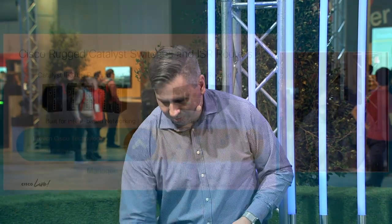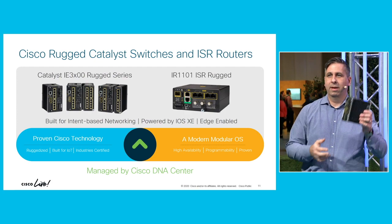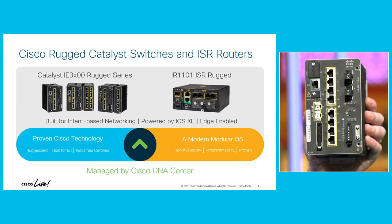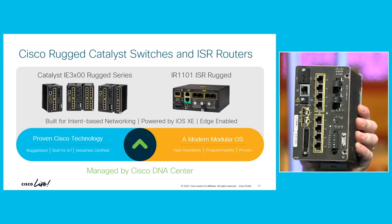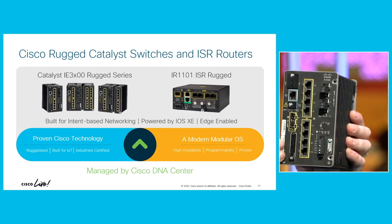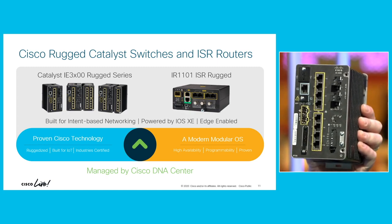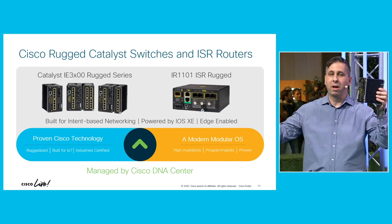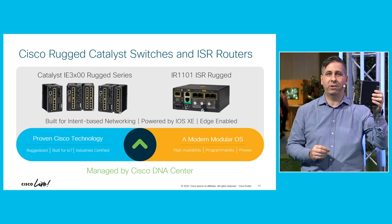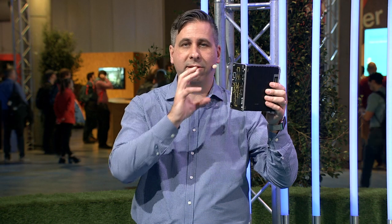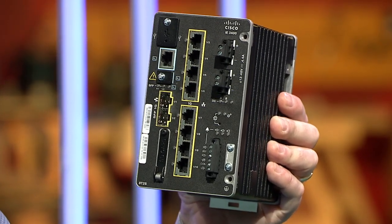So how is Cisco meeting these challenges? Let's start with the networking platforms themselves. This Catalyst Industrial Ethernet 3400 switch is essentially the same Catalyst switch you have in your wiring closet — running iOS XE just like your Catalyst 9K switches — with the same programmable interfaces, the same capabilities, and can be managed by the same platforms. Except it's completely re-engineered from the inside out to withstand rugged environments.